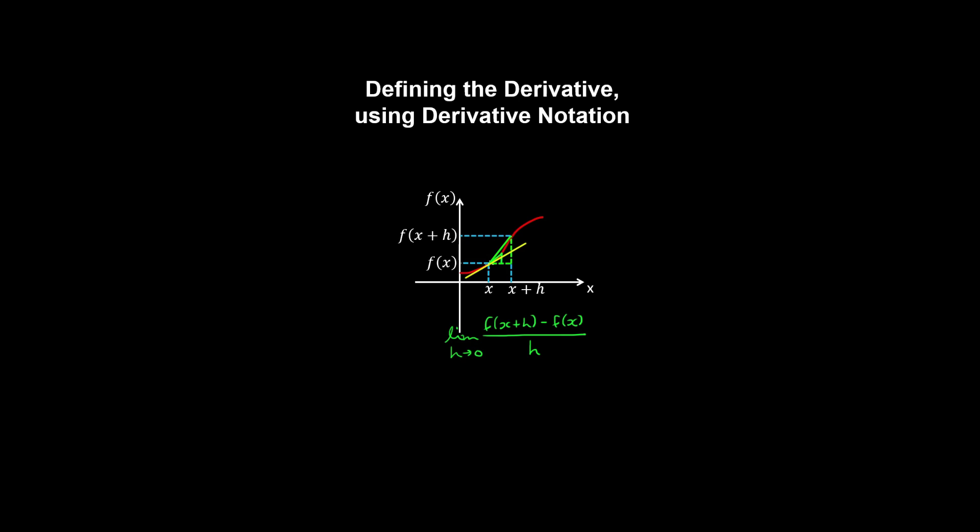And this tangent touches the curve only at x. Okay, so this slope of the tangent line is the derivative, which is denoted f dash of x, provided that this limit exists.